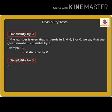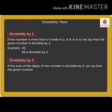Next, divisibility by 3. If the sum of the digits of the number is divisible by 3, we can say that the given number is divisible by 3.